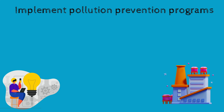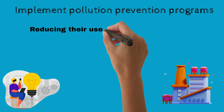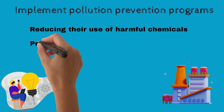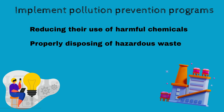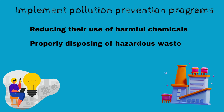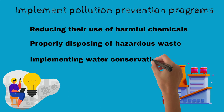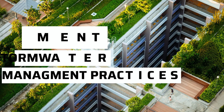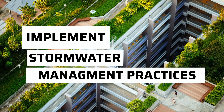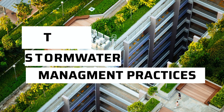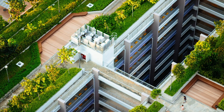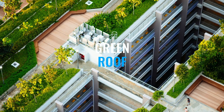This can include reducing their use of harmful chemicals, properly disposing of hazardous waste, and implementing water conservation measures on their premises. Also encourage the implementation of stormwater management practices in your community, such as green roofs and rain gardens, to help reduce pollution runoff.